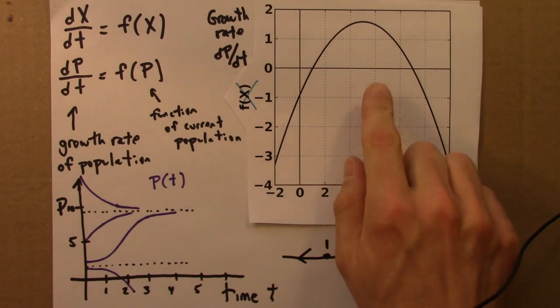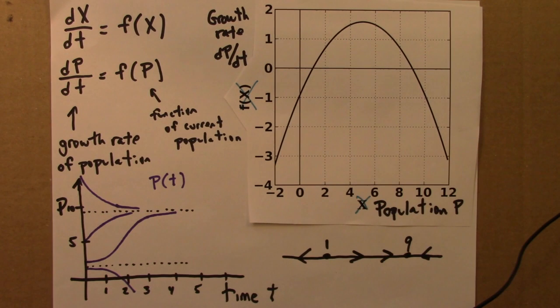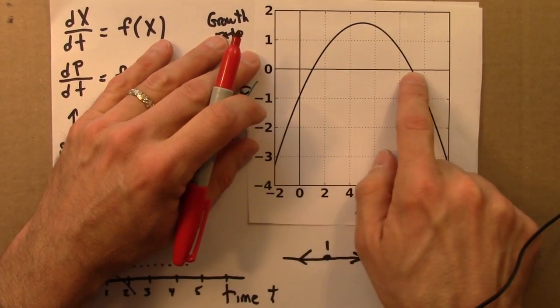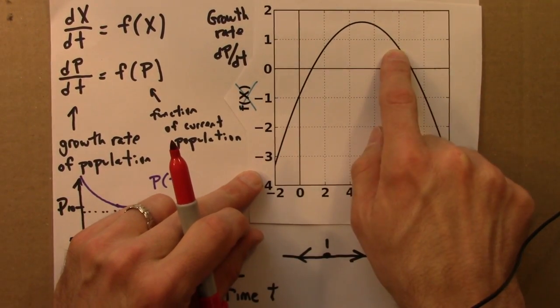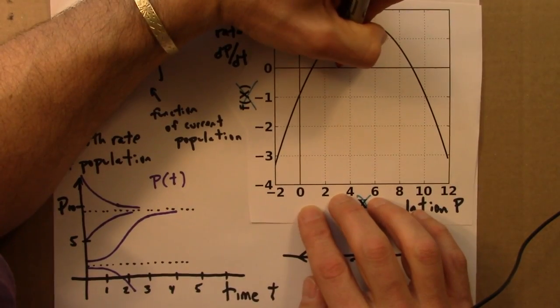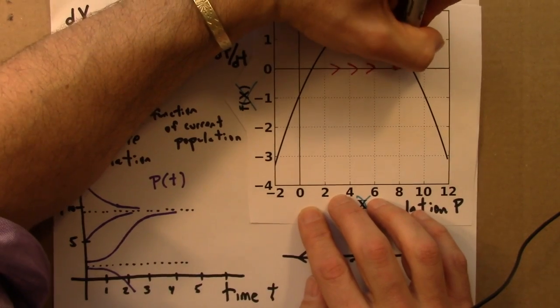I'll do that in a different color so it stands out. Let me grab a bright red pen. So, in this region between 1 and 9, the population is growing. It's moving to the right. Why? Because this graph is positive, and when this graph is positive, that means the growth rate is positive. So, the arrows here have to go like this.